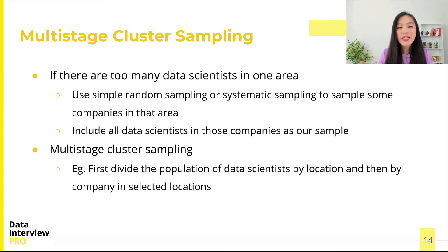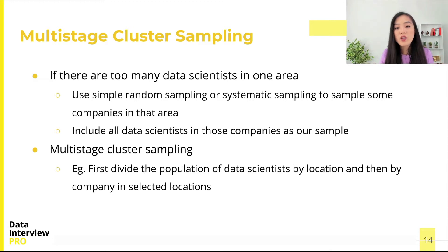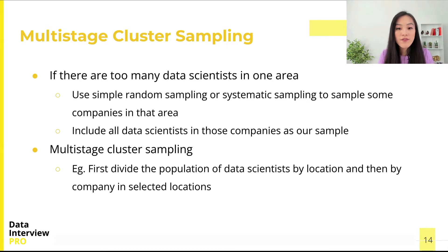If there are too many data scientists in one area and we need to reduce the cost of sampling, we can use simple random sampling or systematic sampling to sample some counties in that area, and then include all data scientists in those counties as our sample. This would be called multi-stage cluster sampling, because we first divide the population of data scientists by location and then by counties in selected locations.